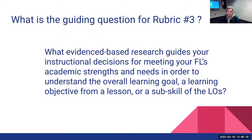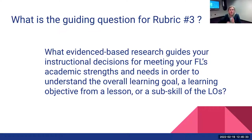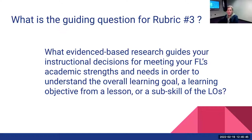So what is the guiding question for rubric number three? Basically, it's asking you what evidence is guiding your instructional decision for the ways in which you support your students' strengths and needs for them to achieve that overall learning goal. So what evidence-based research strategy did you find that gives you the support or challenges that you can then apply to your learner as they're attempting to meet that particular learning goal?